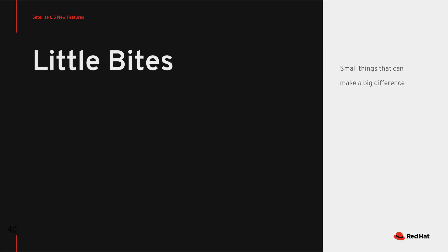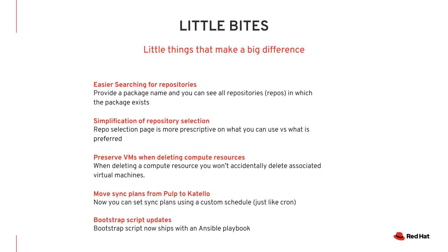In addition to all these big named features, we also have what we're calling little bytes — small things that can really help to make a big difference. We've made it easier to search for repositories and simplified repository selection. We've also made it easier for you to preserve VMs when deleting compute resources. We've moved our sync plans from PULP to Katello, and we've added some Ansible playbook capabilities to the bootstrap script.